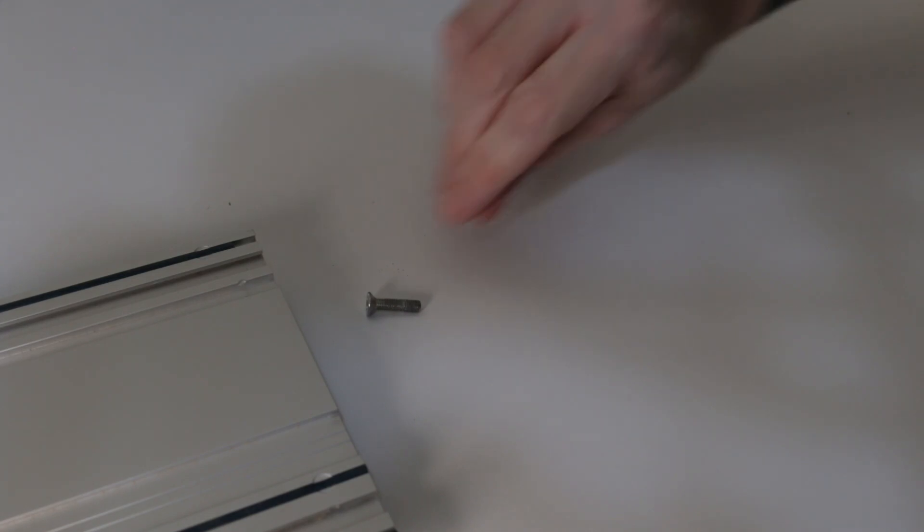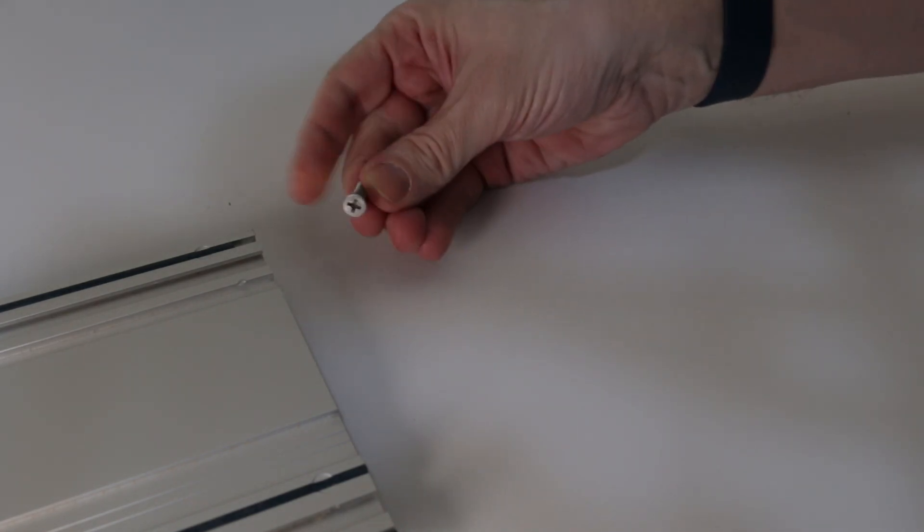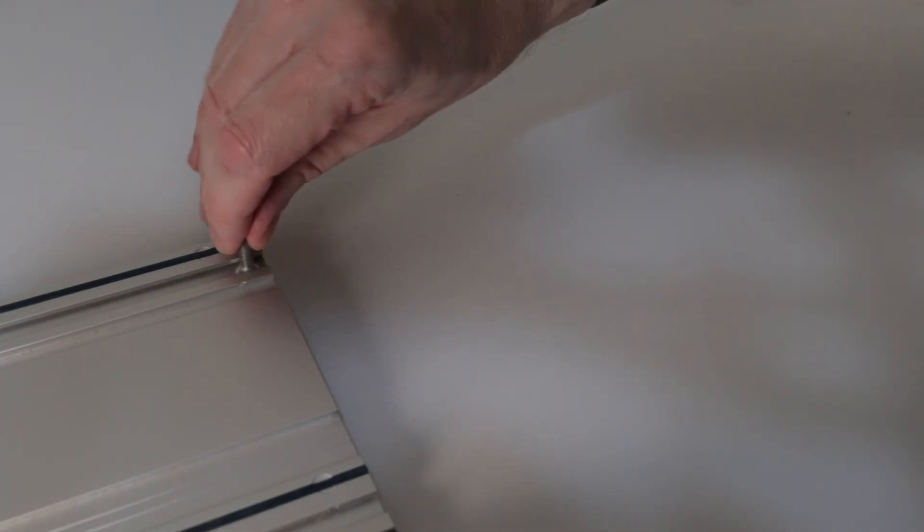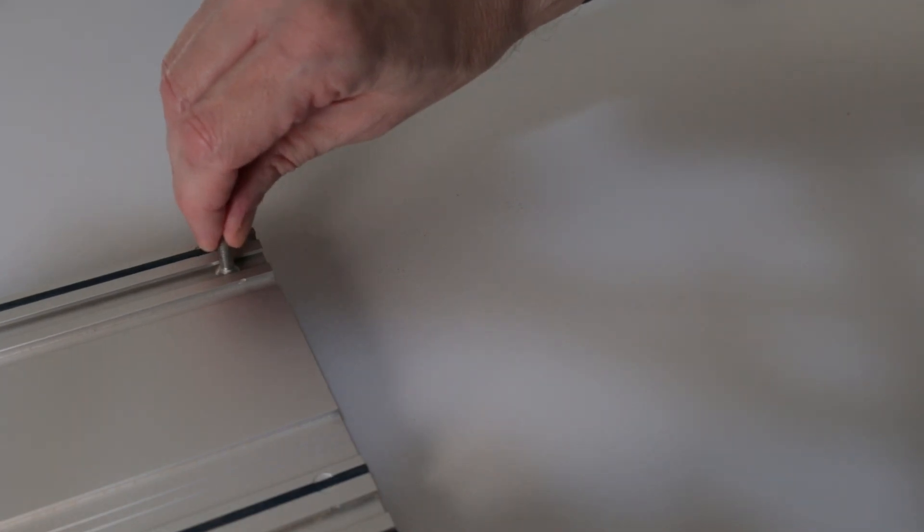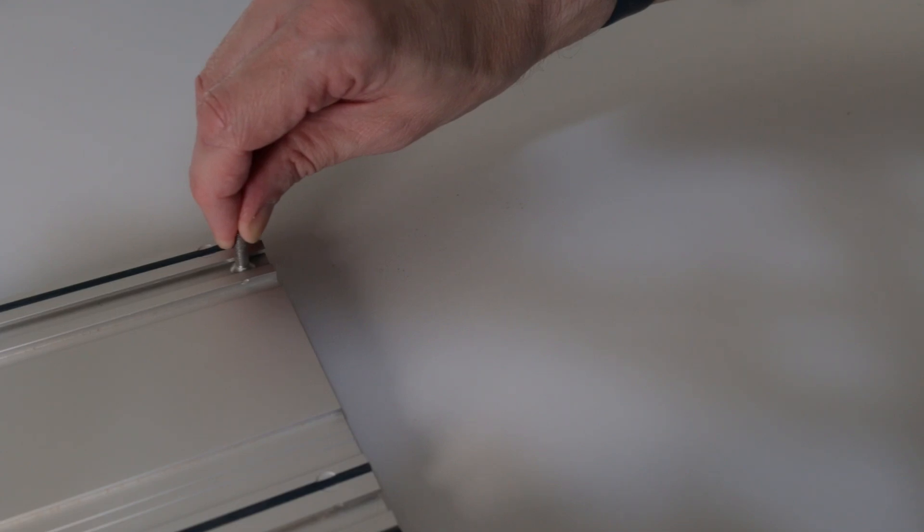So one thing I thought of trying was can we take a countersink machine screw and use that as the clamping mechanism. Yep, so that fits in fairly nice and snug, so I think we can make something out of this. So let's make a few test prints.